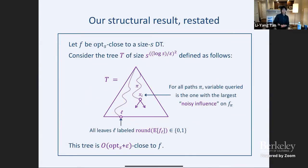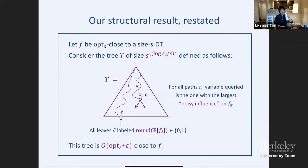Here is the formal structural result. Let f be any function that is opt-close to some decision tree of size s. Consider the tree T of size s to the log(s) squared, defined as follows: for every path pi leading to an internal node, query the variable with the largest noisy influence on f_pi; for every leaf, label with the zero-one value rounded according to the expectation of f_l. The claim is that this tree T will be order opt plus epsilon close to f.